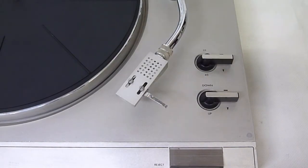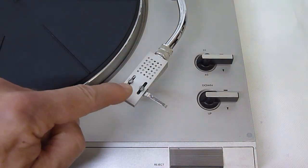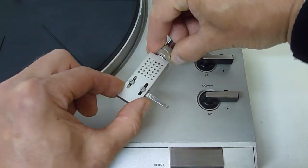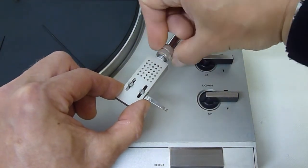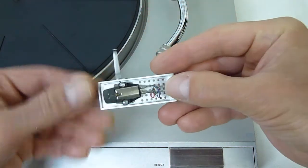Before we start adjusting the tonearm we need to make sure that the cartridge is correctly aligned first. I can see visually that the screws don't look perfect so I'm going to unscrew this locking ring, remove the head shell and have a look.